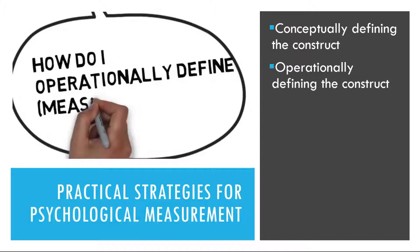Once you have a conceptual definition of the construct you're interested in studying, it's time to operationally define the construct. An operational definition is a definition of the variable in terms of precisely how it is to be measured. Since most variables are relatively abstract concepts that can't be directly observed — like stress — conceptual definitions must be transformed into something that can be directly observed and measured. Most variables can be operationally defined in many different ways. For example, stress can be operationally defined as people's scores on a stress scale such as the Perceived Stress Scale, or it could be cortisol concentrations in their saliva, or it could be the number of stressful life events they've had recently. Operationally defining your variables of interest may involve using an existing measure or creating your own.